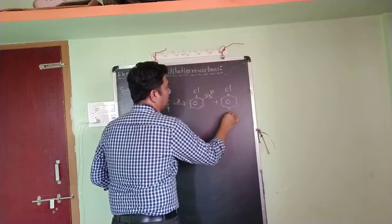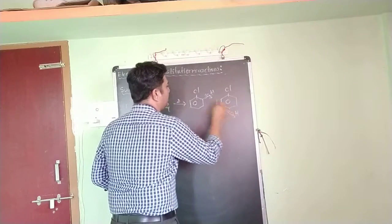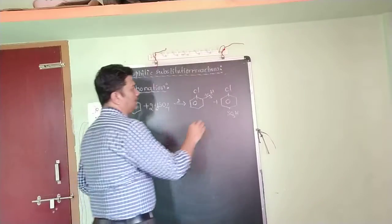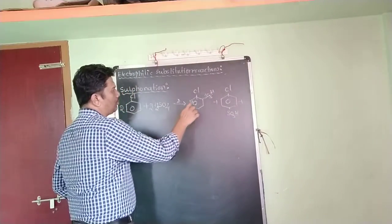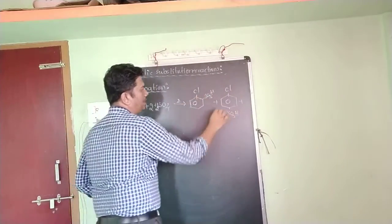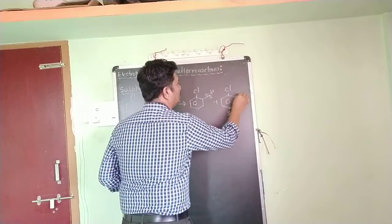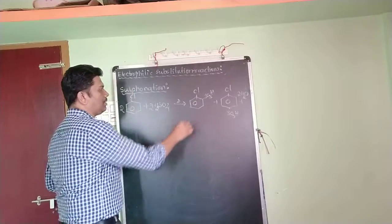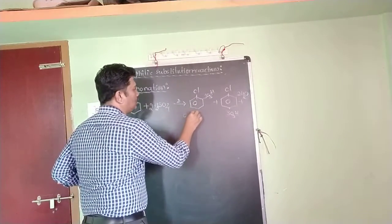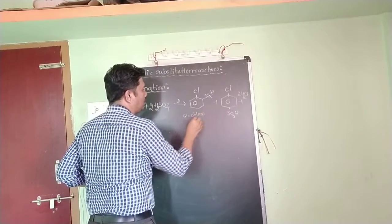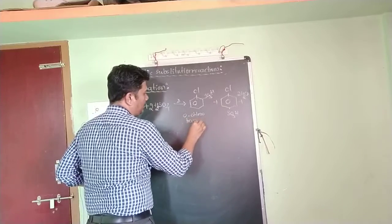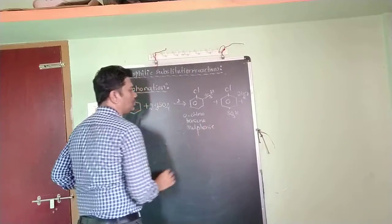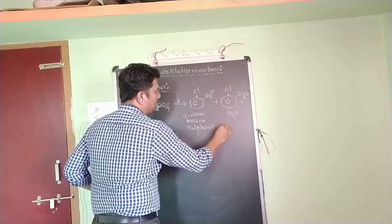SO3H first attacks at the ortho position, then at the para position. The last step is loss of proton from both ortho and para positions, producing 2H2O. The resulting compound is ortho chlorobenzene sulfonic acid.